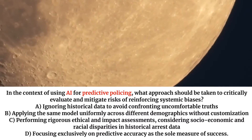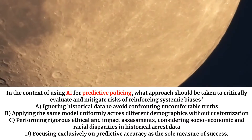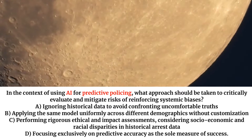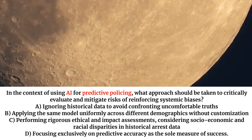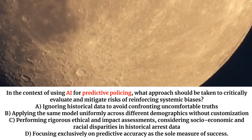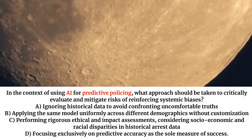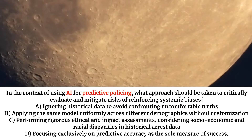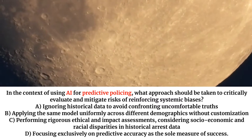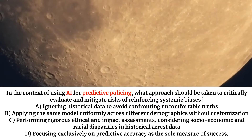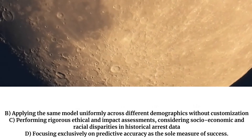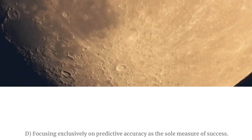In the context of using AI for predictive policing, what approach should be taken to critically evaluate and mitigate risks of reinforcing systemic biases? A. Ignoring historical data to avoid confronting uncomfortable truths. B. Applying the same model uniformly across different demographics without customization. C. Performing rigorous ethical and impact assessments, considering socioeconomic and racial disparities in historical arrest data. D. Focusing exclusively on predictive accuracy as the sole measure of success.